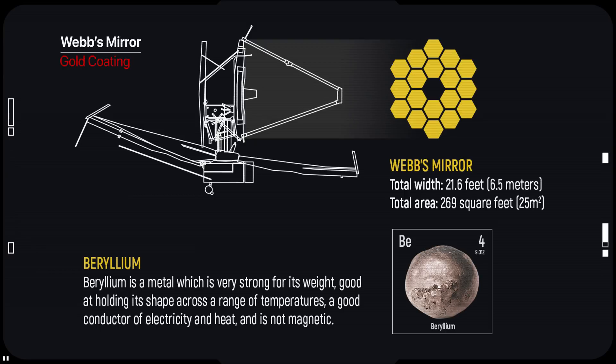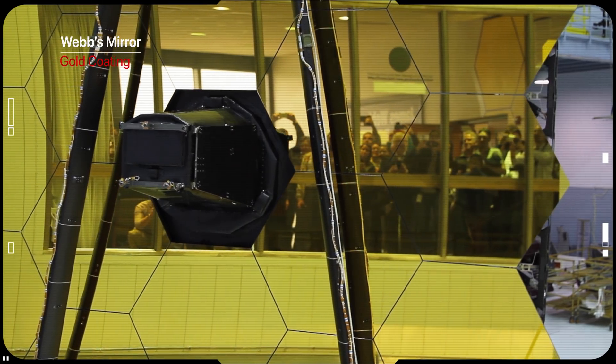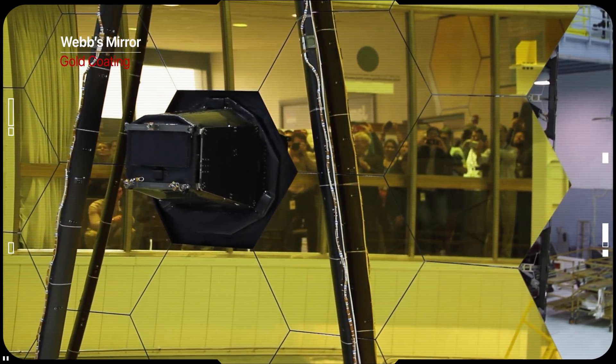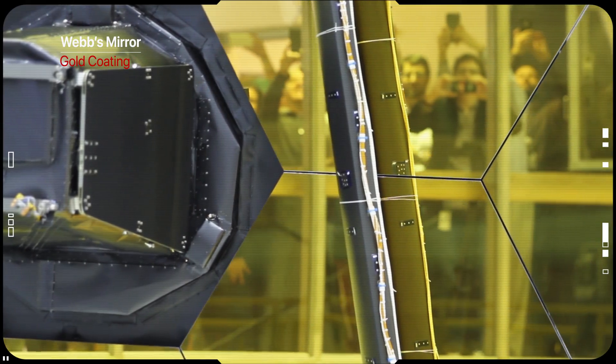Webb's mirror segments are made from beryllium with a thin coating of gold, which is both strong and light. Each segment weighs approximately 20 kg. Gold improves the mirror's reflection of infrared light.